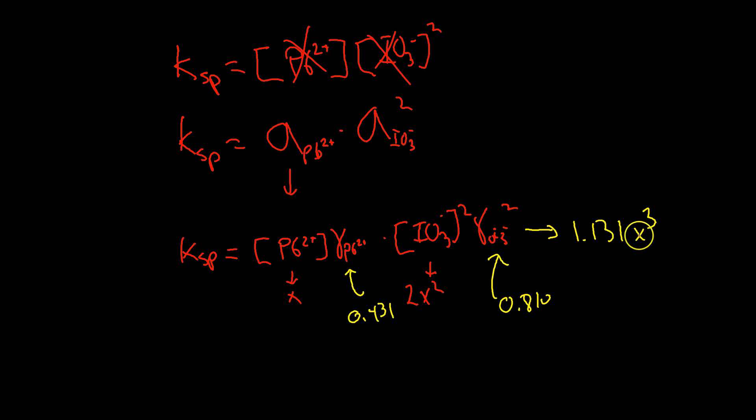We combine these all together and end up with 1.31 times x cubed. If we plug in our value for Ksp, 2.5 times 10 to the minus 13 equals 1.31 times x cubed. We divide this by 1.31 and take the cubic root, so x equals the cubic root of 2.5 times 10 to the minus 13 divided by 1.31. This gives us x equal to 6.0 times 10 to the minus 5.